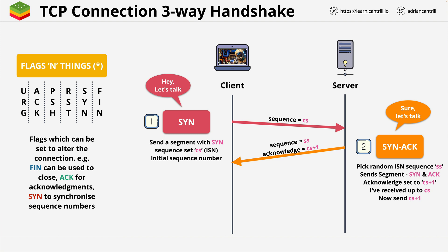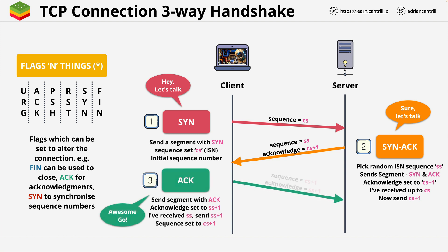The SYN-ACK is used to synchronize sequence numbers but also to acknowledge receipt of the client sequence number. Where the first segment was called a SYN to synchronize sequence numbers, the next segment is a SYN-ACK — it serves two purposes. The client receives the segment from the server and now knows the server sequence SS. To acknowledge to the server that it received all of that information, it takes SS and adds one, putting this value as the acknowledgement. It also increments its own client sequence value by one, and sends an acknowledgement segment containing all this information to the server.